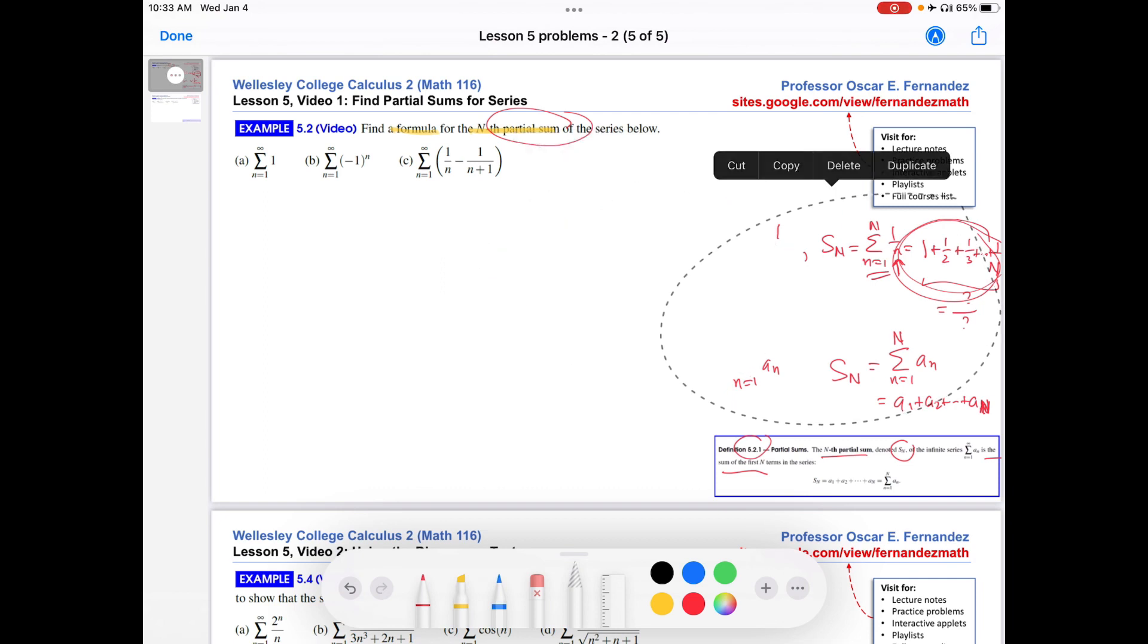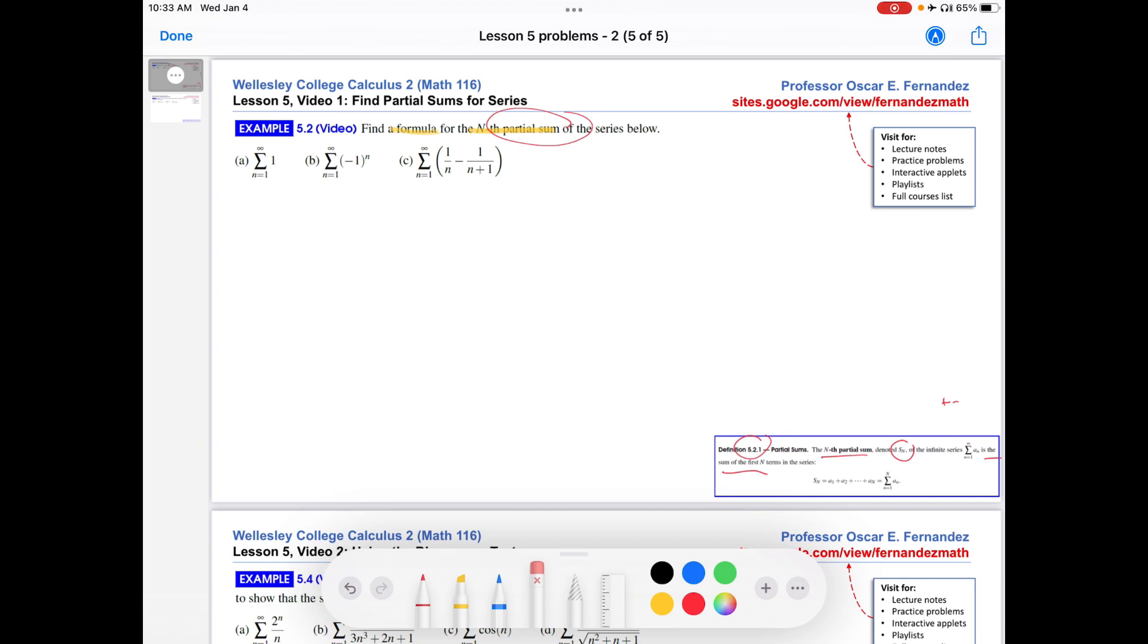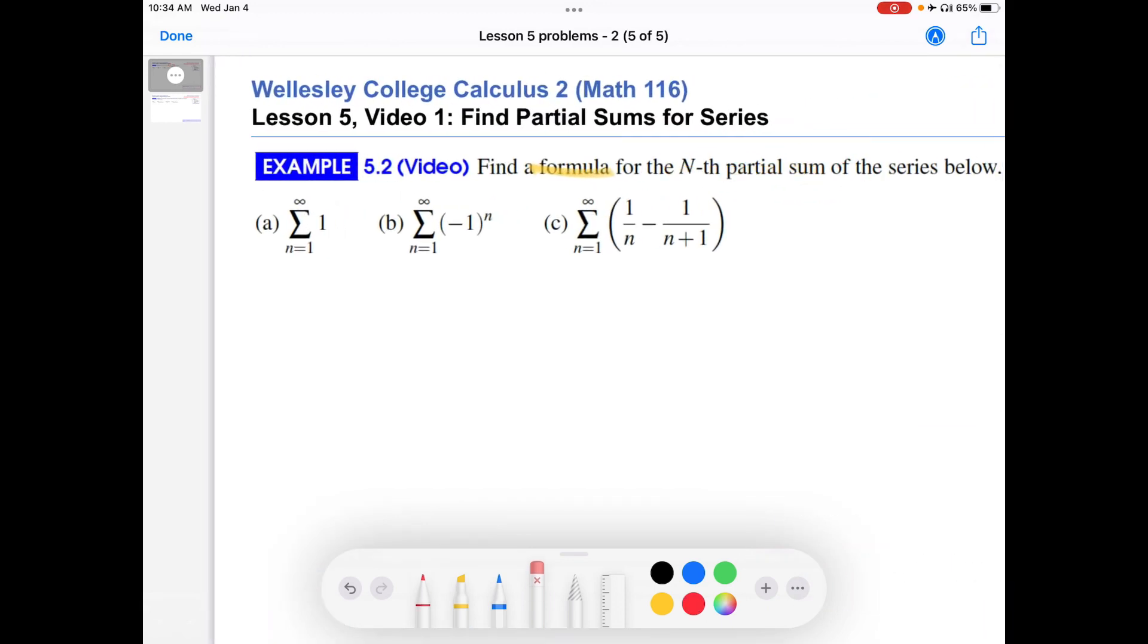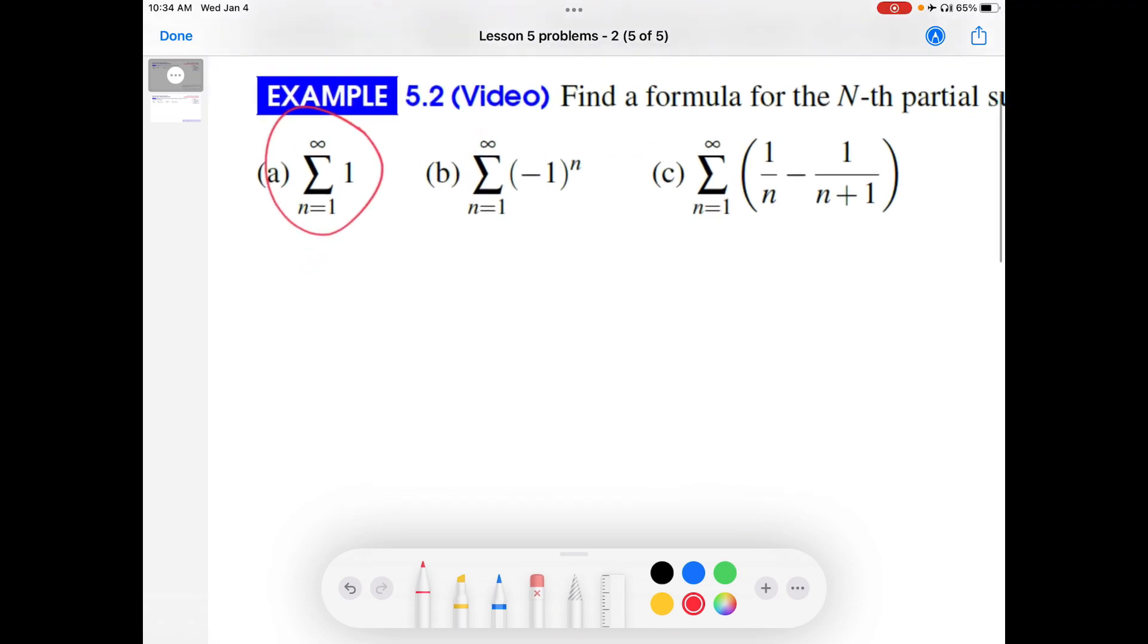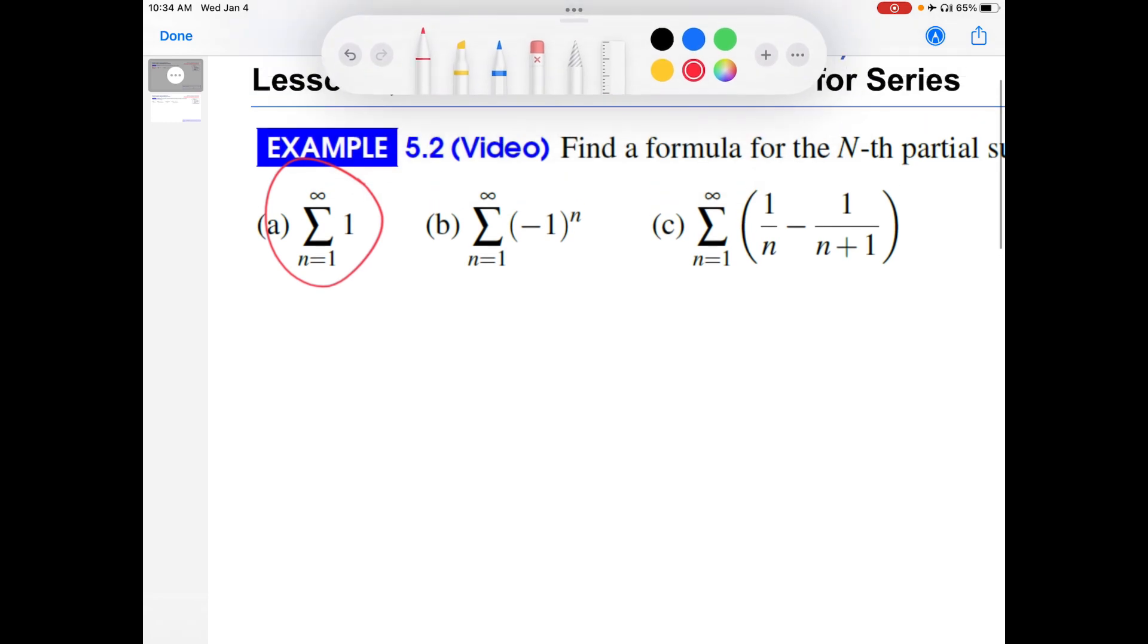Clearly, if you want to find the limit as n goes to infinity of anything, it would be nice if you have a formula for it, not if it's left in some version where there's a bunch of terms that are just being added. So it does pay to find some closed formula for S sub n. We're going to do that in this example. That is the point of this example to help you develop that skill to find closed S sub n, closed form S sub n formulas. Let's take a look at the first one.